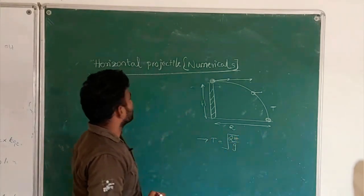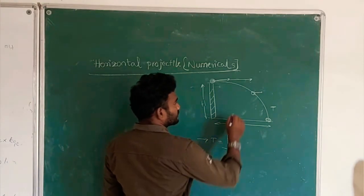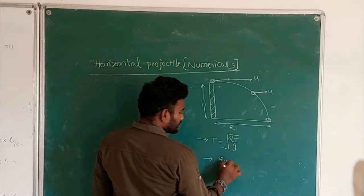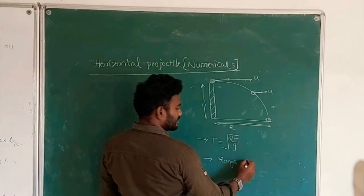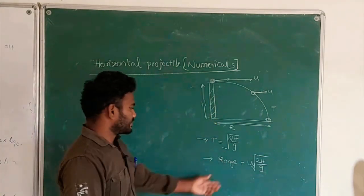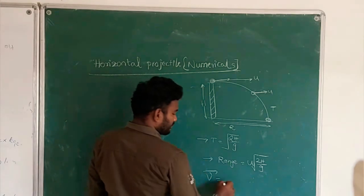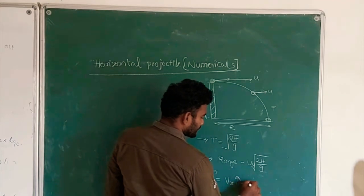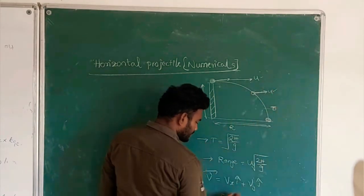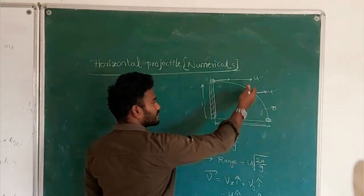You can see my previous video on horizontal projectile motion for these formulas. The second formula: the horizontal velocity is always constant. The horizontal range R equals the horizontal velocity U multiplied by the time of flight. The velocity vector at any time t is given by Vx î + Vy ĵ, which equals U î − Gt ĵ. The minus sign is because the object is moving downward.